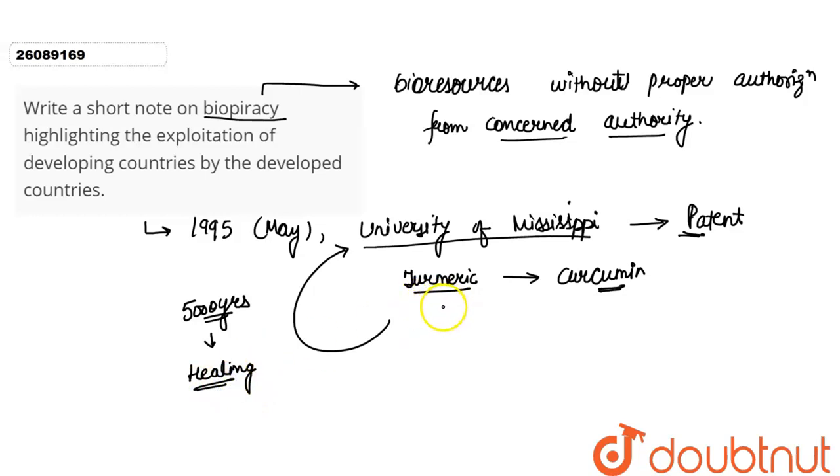So this was an example highlighting the exploitation of a developing country that was India by a developed country that was the United States.